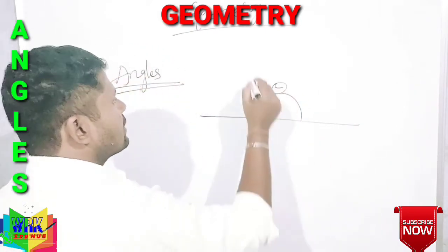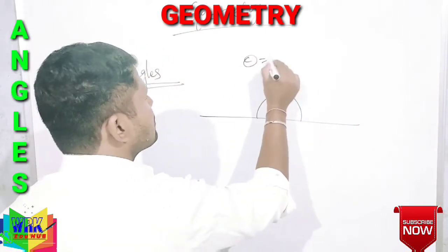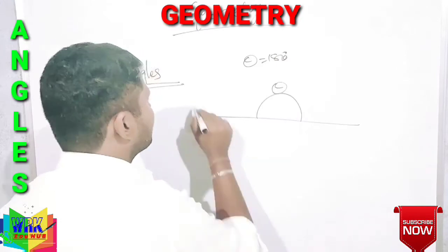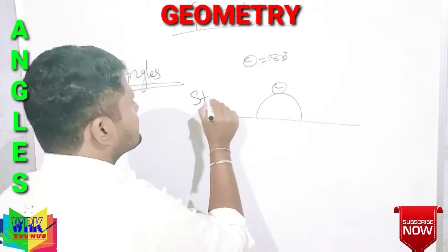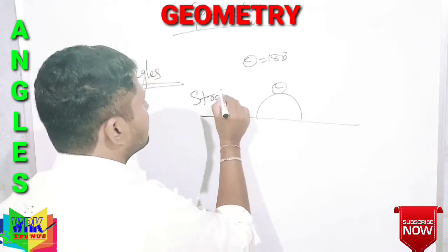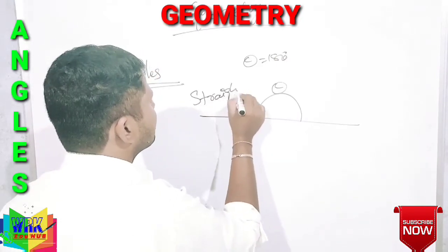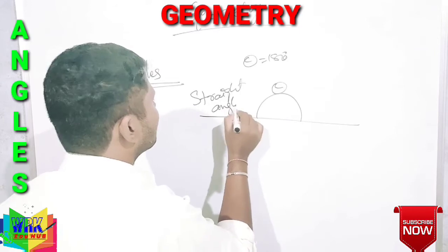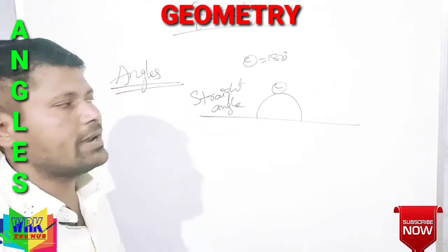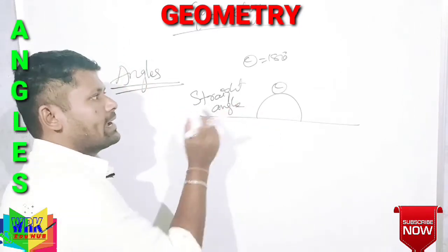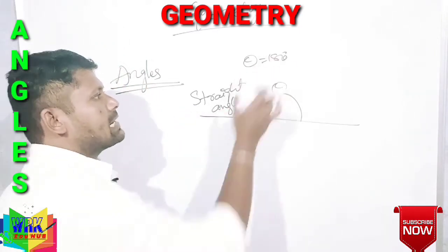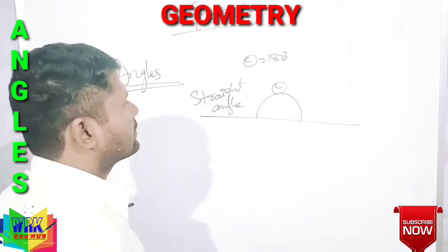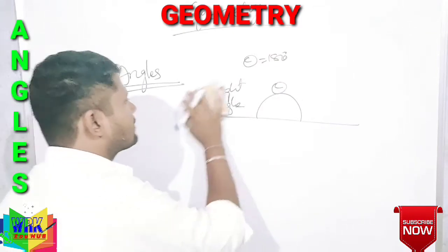If theta equals 180 degrees, then it is said to be a straight angle.